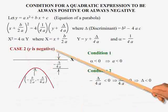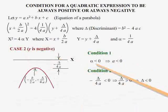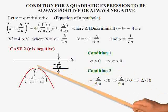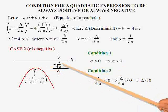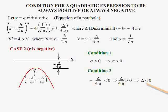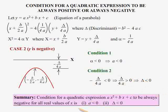Case 2: y is always negative. Condition 1: alpha should be negative, in other words a should be negative. Condition 2: the vertex should be below the x-axis, meaning minus delta over 4a should be negative, or delta over 4a should be positive. This implies delta should be negative, since 4a is negative per condition 1. Summary: for the quadratic expression ax squared plus bx plus c to be always negative for all real values of x, a must be less than 0 and delta must be less than 0.